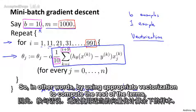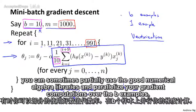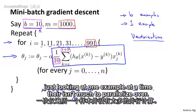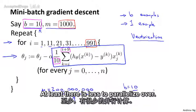So in other words, by using appropriate vectorization to compute the derivative terms, you can sometimes partially use the good numerical linear algebra libraries to parallelize your gradient computations over the b examples. Whereas if you were looking at just a single example at a time with stochastic gradient descent, then looking at just one example at a time, there isn't much to parallelize over.